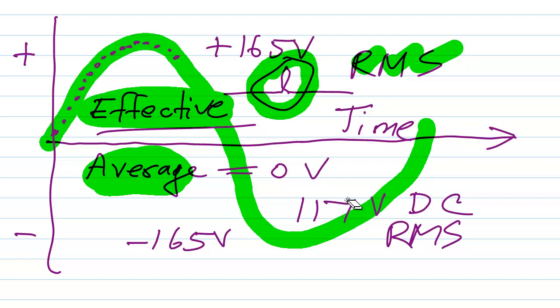It gives you 117 volts. And the reason is that when you square every value, you change all these negative values here to positive values, so you're no longer getting an effective or average of zero.